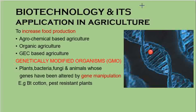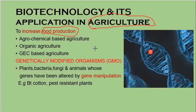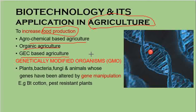Biotechnology is applied in agriculture mainly to increase food production. Food production can be increased by three methods: agrochemical-based agriculture, organic agriculture, and genetically engineered crop-based agriculture. We are going to discuss genetically engineered crop (GEC)-based agriculture.